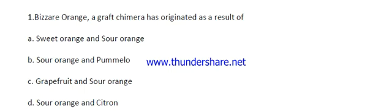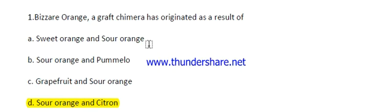Question number one: Bizarre orange, a graft chimera, has originated as a result of which cross? The options are: sweet orange with sour orange, sour orange with pumelo, grapefruit with sour orange, or sour orange with citron. The right answer is sour orange with citron. A grafted chimera generally occurs when two plants — rootstock and scion — are grafted, and at the joining point a new shoot arises which governs the characteristics of both scion and rootstock.